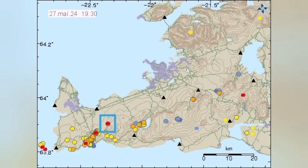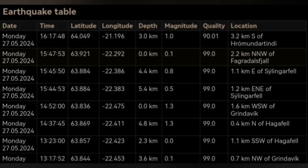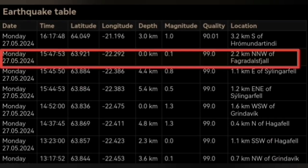When we look at the depth of it, this is at zero depth, 2.2 kilometers north of Fagradalsfjall. That's practically exactly on the plate boundary. It was a small one.